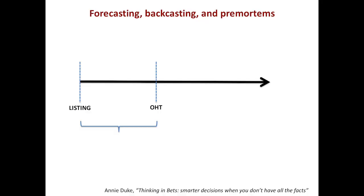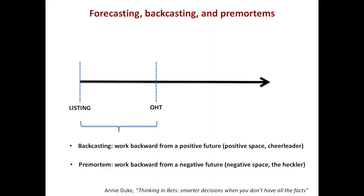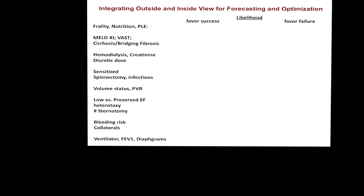Forecasting is important, but there's also backcasting — from Annie Duke's book. Backcasting means putting yourself at the point where the patient has received the offer and working backwards to ask: what did we do right all along? That's the cheerleader — saying we can do this. There's also the pre-mortem: putting yourself at failure and asking where did we go wrong. The two together create the whole picture. A lot happens before the OR that actually sets up those slopes.